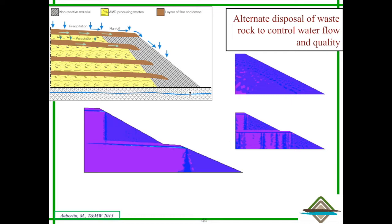If you have non-reactive, non-PAG for instance waste rock, you can use it at the external boundary of your pile so all the water basically would be moving toward this area and not being in contact with the reactive, the PAG material.